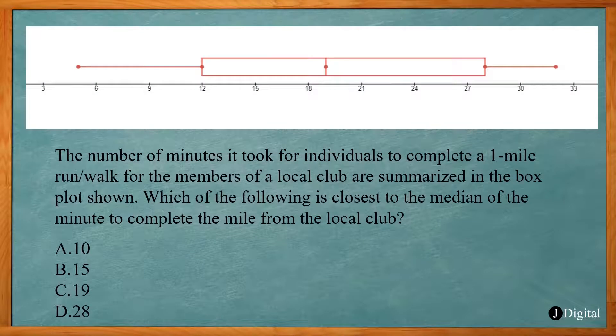So this problem says the number of minutes it took for individuals to complete a one-mile run walk for the members of a local club are summarized in the box plot shown. Which of the following is closest to the median of the minutes to complete the mile from the local club? So remember we said the median is the bar inside the box. So here. So we can see it's between 18 and 21. So our median is between 18 and 21.